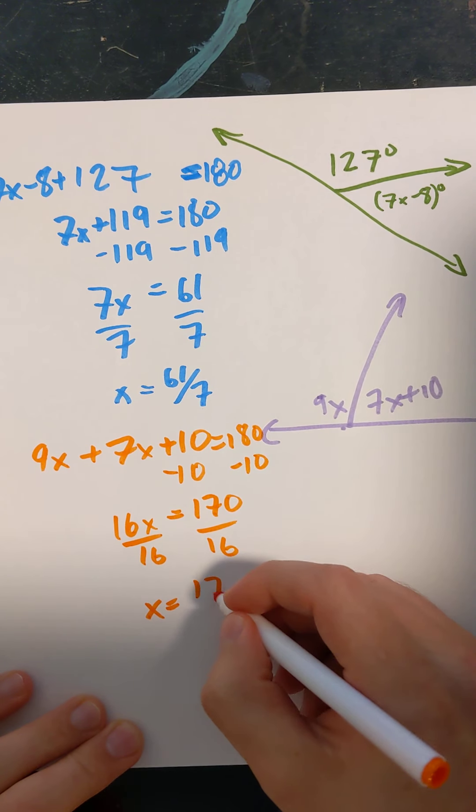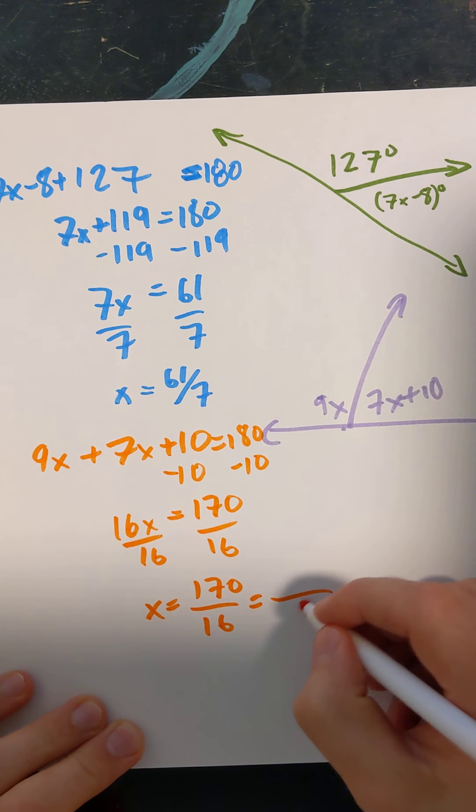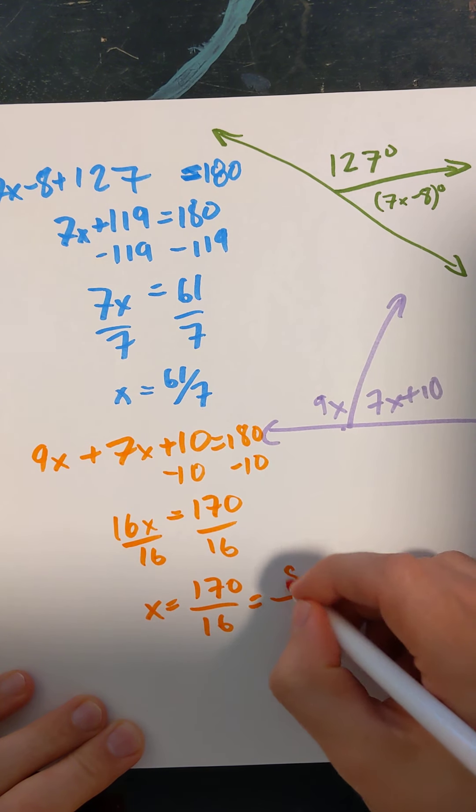And X equals 170 over 16. I guess if we want to reduce that, I know at least these both are divisible by 2. So 16 divided by 2 is 8, 170 divided by 2 is 85.